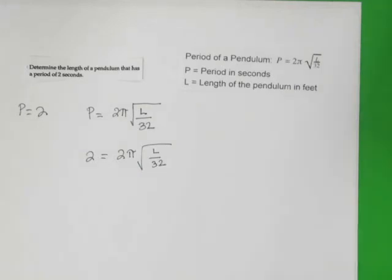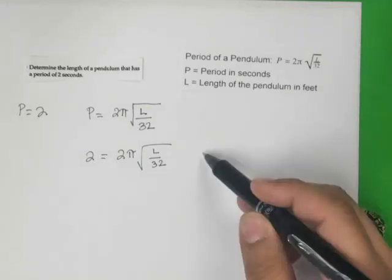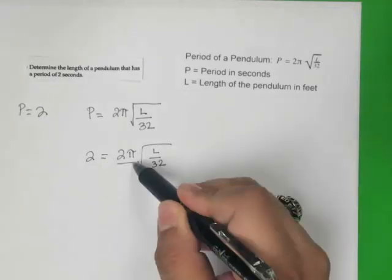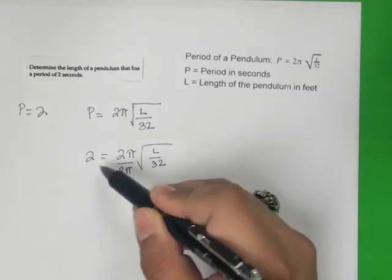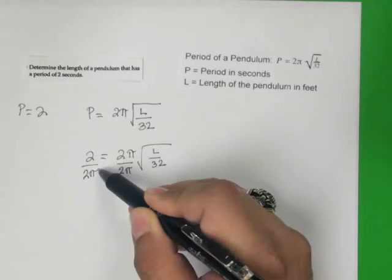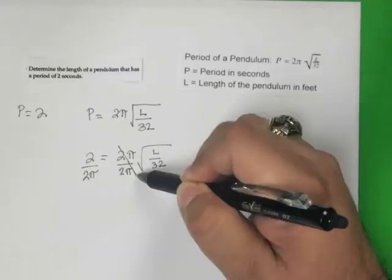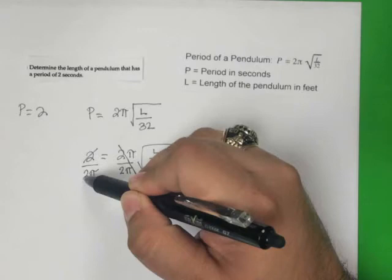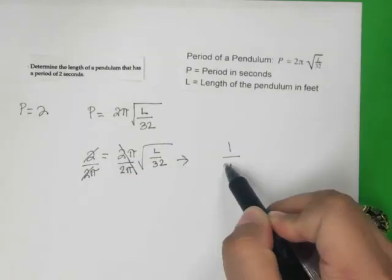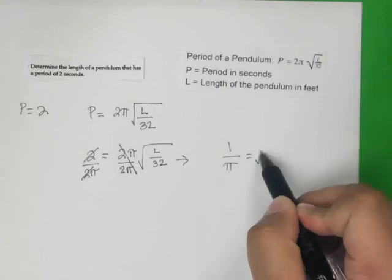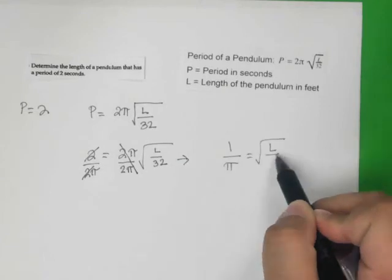The first thing we need to do is isolate this square root. What we're going to do is divide both sides by two pi. This crosses out, and we're left with 1 over pi equals the square root of L, the length of the pendulum in feet, divided by 32.